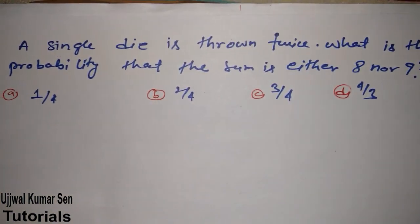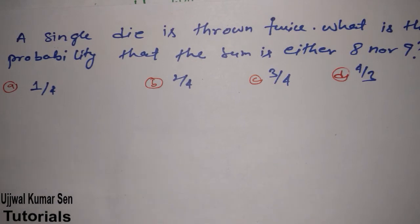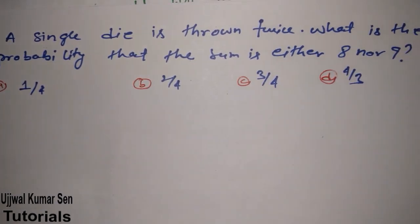Welcome, and in this tutorial I'm going to share with you a question which was asked in a GATE previous year exam. This is a question about dice. I hope you can read the question. What they have asked in this question: a single die is thrown twice. This is the key to this question.